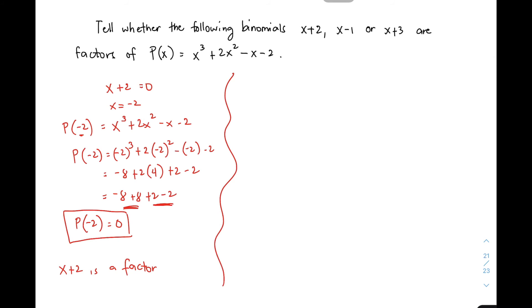So let's move on with the next binomial, x minus 1. Equating natin na 0, magiging x is equal to 1. Using the same equation or the same function, p of 1 is equal to x cubed plus 2x squared minus x minus 2. Equating 1, 1 cubed plus 2 times 1 squared minus 1 minus 2.